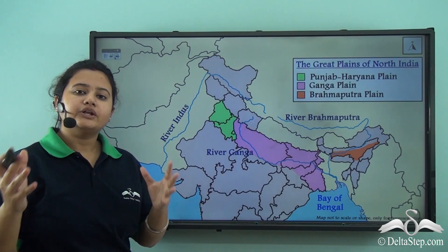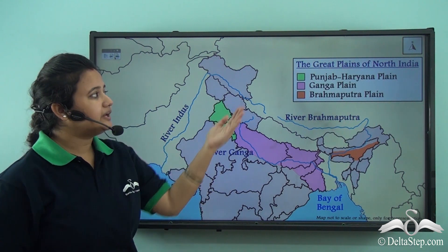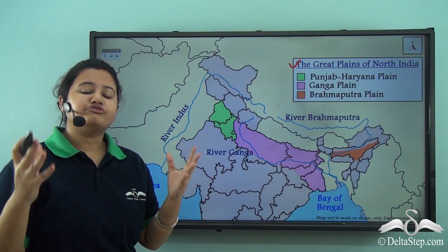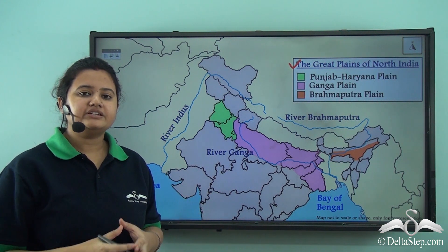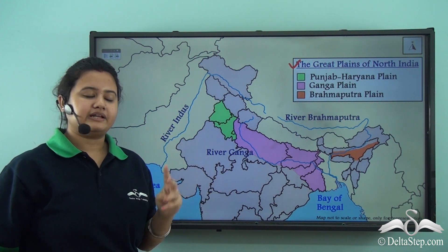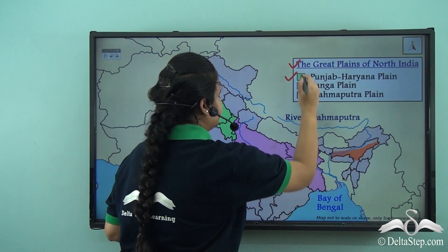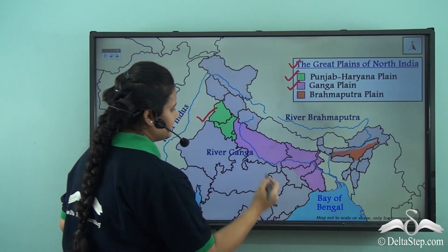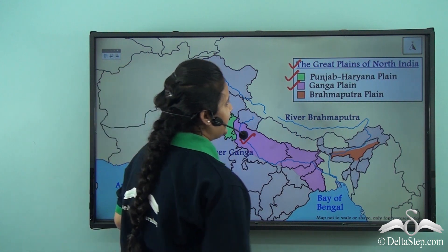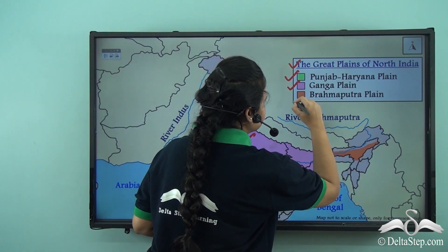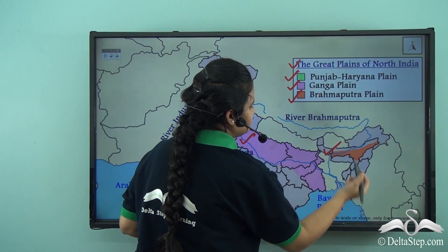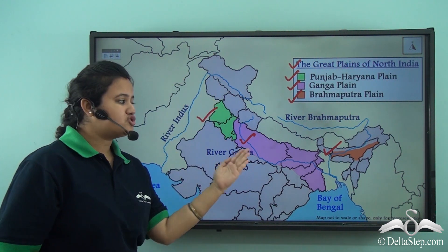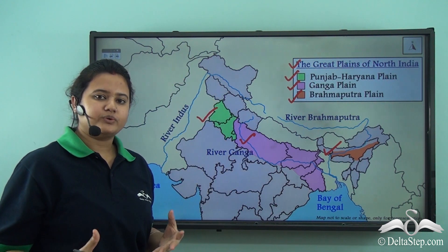The Northern Plains, or the Great Plains of India, are so large that they can be further divided into three smaller plains. They are: the Punjab and Haryana Plain, then the Ganga Plain in the middle part, and finally the Brahmaputra Plain in the extreme east. We will discuss about each of these plains gradually.